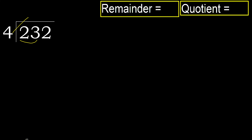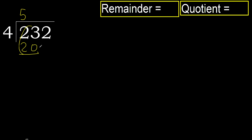4 multiplied by 6 is 24, which is greater. Multiply by 5: 20, which is not greater. Subtract, then next.